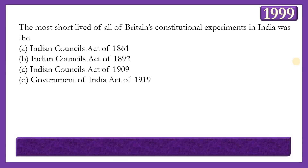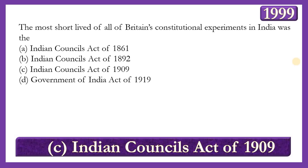Next question: The most short-lived of all Britain's constitutional experiments in India was which act? Options: Indian Councils Act of 1861, Indian Councils Act of 1892, Indian Councils Act of 1909, or Government of India Act of 1919. The answer is option C — Indian Councils Act of 1909, also commonly known as the Morley-Minto Reforms — because it was very short-lived, as the Government of India Act 1919 (Montagu-Chelmsford Reforms) came forward in response to increasing demands for home rule.